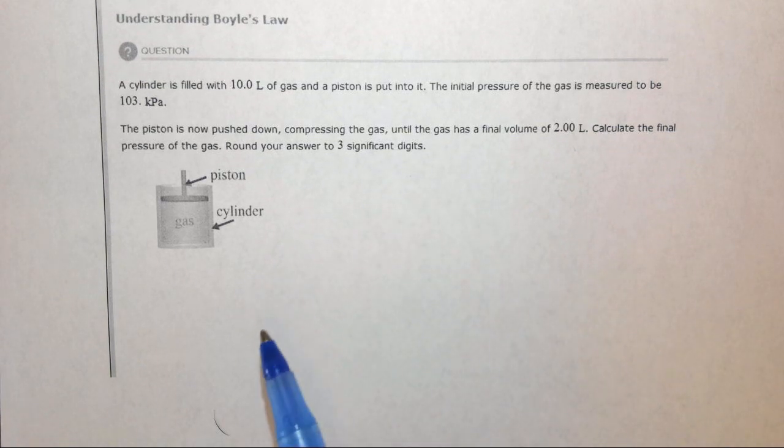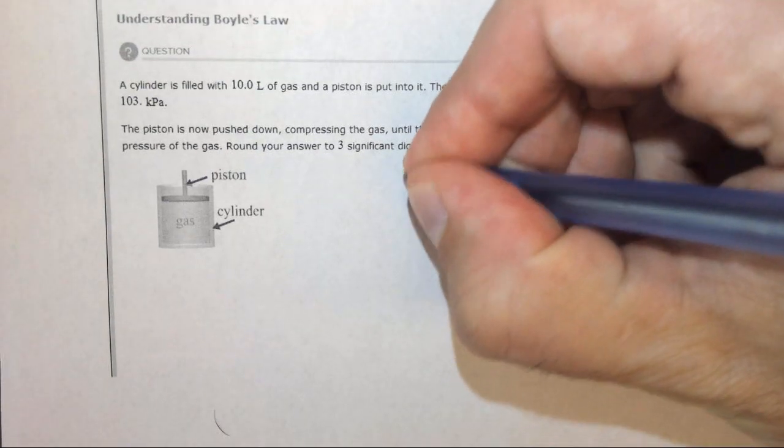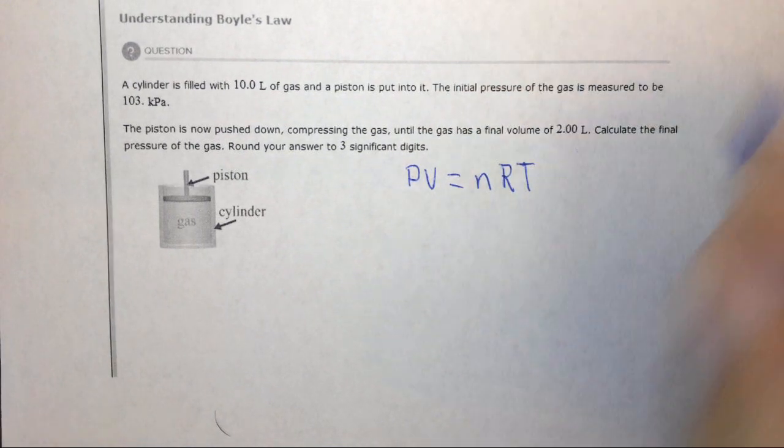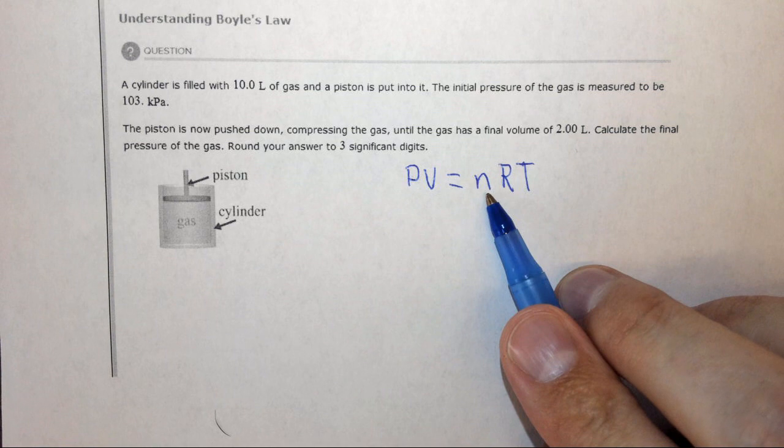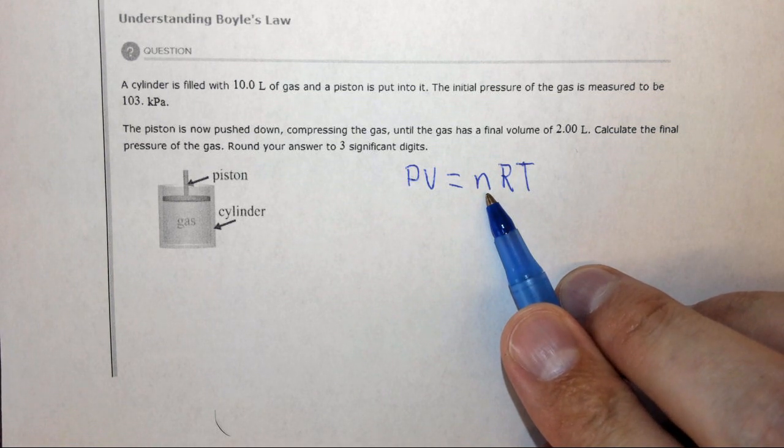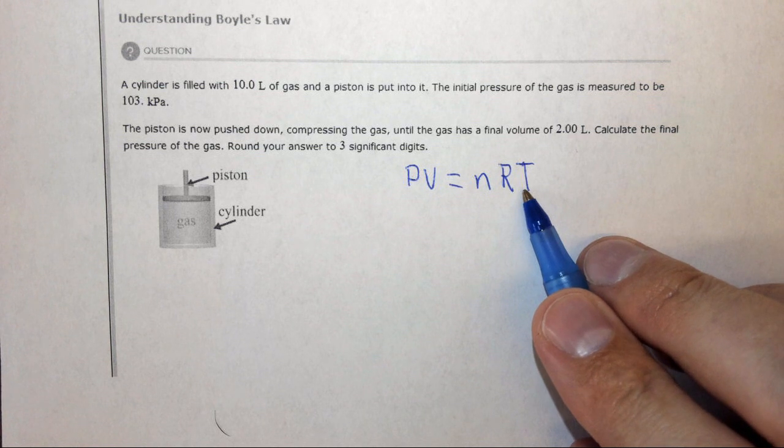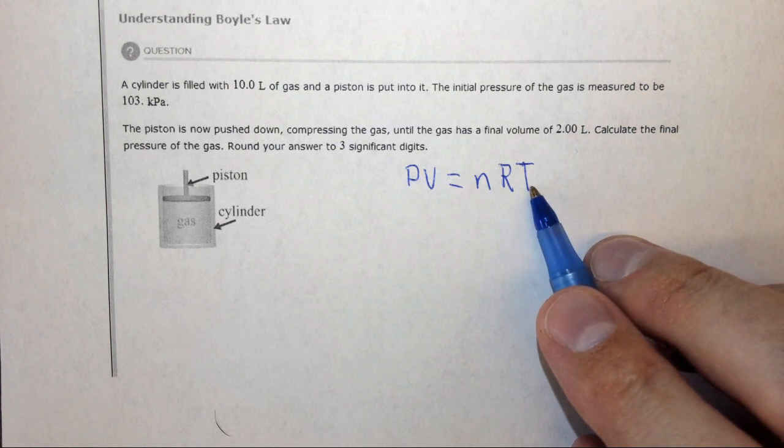We're relating two variables using the ideal gas law: PV equals nRT. P is the pressure, V is the volume, n is the number of moles, R is the ideal gas constant, and T is the temperature in Kelvin.